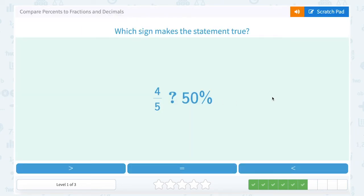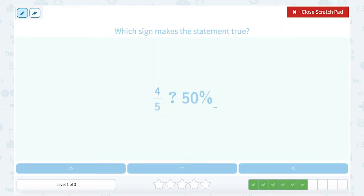Four-fifths, how does that compare to 50%? Well, I could either make these both percentages, or I can make them both fractions. Let's make them both fractions. 50%, well, if I want to turn that into a fraction, remember, a percentage always means out of 100. So 50% means 50 out of 100.